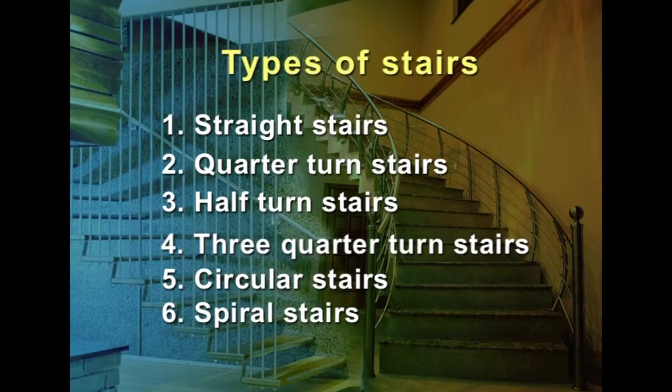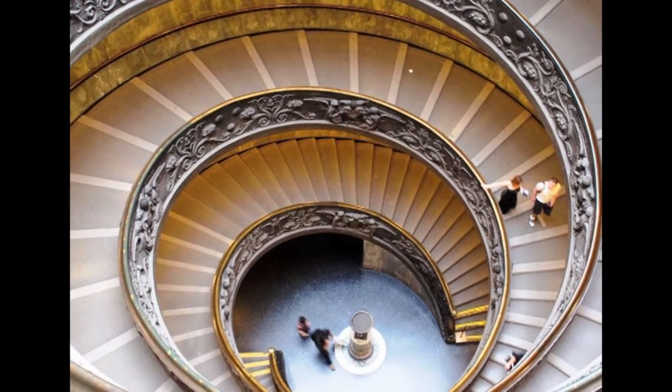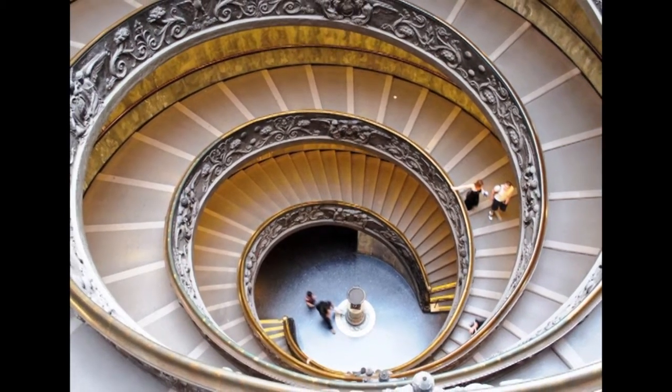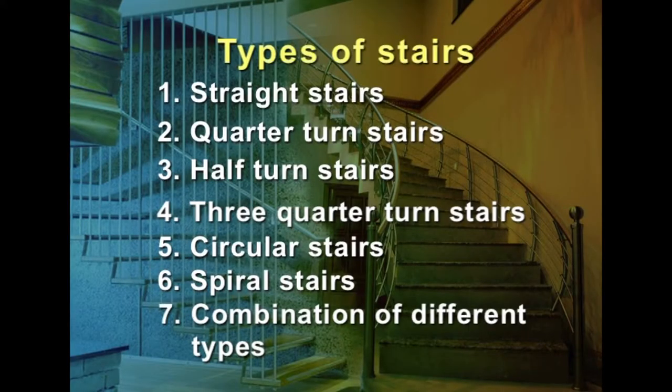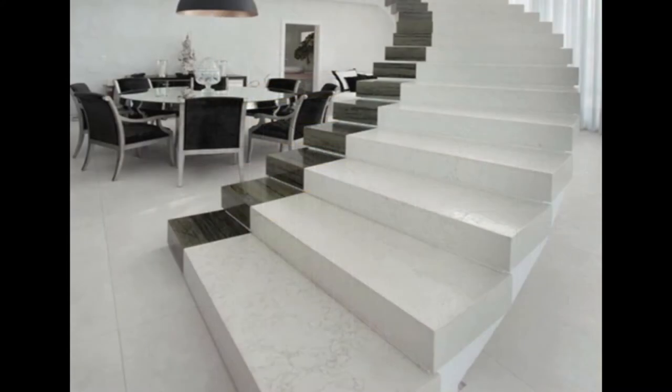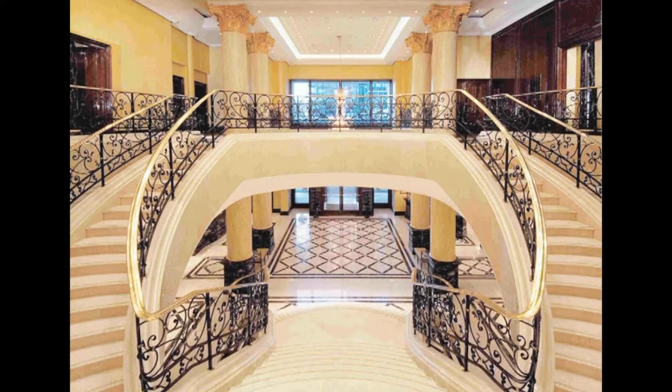Spiral stairs are similar to circular stairs except that the radius of curvature is small and the stairs may be supported by a central post. The overall diameter of such stairs may range from 1 to 2.5 meters. Depending on the requirement of a building or the owner's demand, a few types of stairs can be combined to design a new stair.